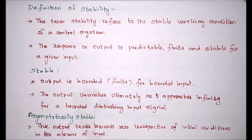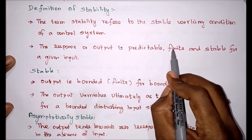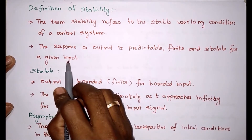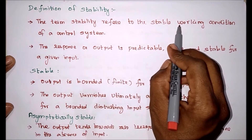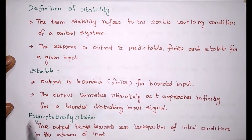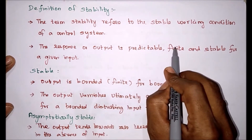In this video, we are going to see the definition of stability and also various types of stability. The term stability refers to the stable working condition of a control system. The response or output is predictable, finite, and stable for a given input. A system with stable working condition is called stable. When the system is stable, the output is predictable and also finite.